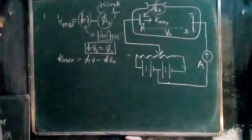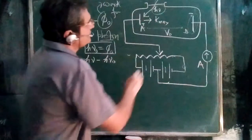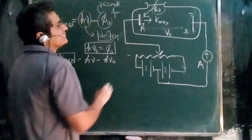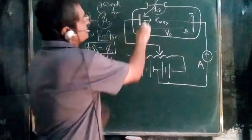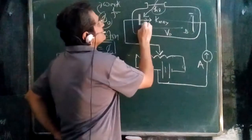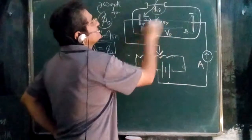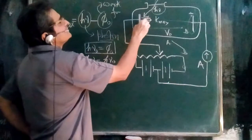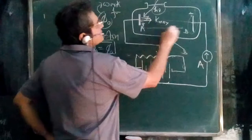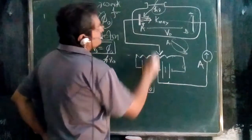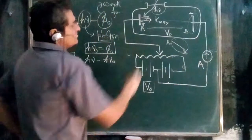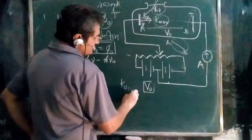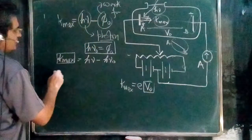We equate K_max with the stopping potential. Suppose electrons are being emitted here - I make plate A negative and plate B positive, and keep increasing the potential difference such that A is at higher potential and B is at lower potential. Electrons ejected are pulled back by plate A and repelled by plate B. I increase this up to level V₀ where the electron is completely stopped and current completely stops. So the maximum kinetic energy equals eV₀.